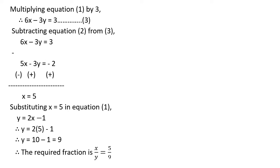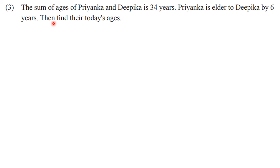Now let's go towards problem number 3. This problem is age-related. Every problem is different: the first question was about money transactions, the second was about fractions, and now this third one is about ages. Let's read the question: the sum of ages of Priyanka and Deepika is 34 years. Priyanka is older than Deepika by 6 years. Find their present ages.